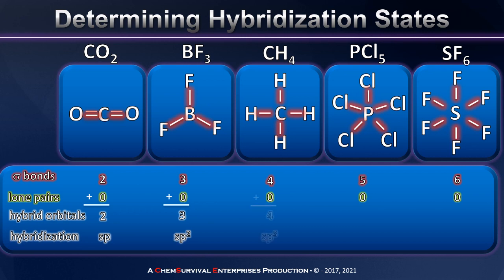Methane has four sigma bonds, giving SP3. Phosphorus pentachloride has five, giving SP3D — we've had to bring a d orbital in to ensure we have the five hybrid orbitals necessary to accommodate all of those sigma bonds. And finally, sulfur hexafluoride has six sigma bonds, giving SP3D2. Now let's take a look at a few more examples that do have lone pairs and see how that affects determining their hybridization states.